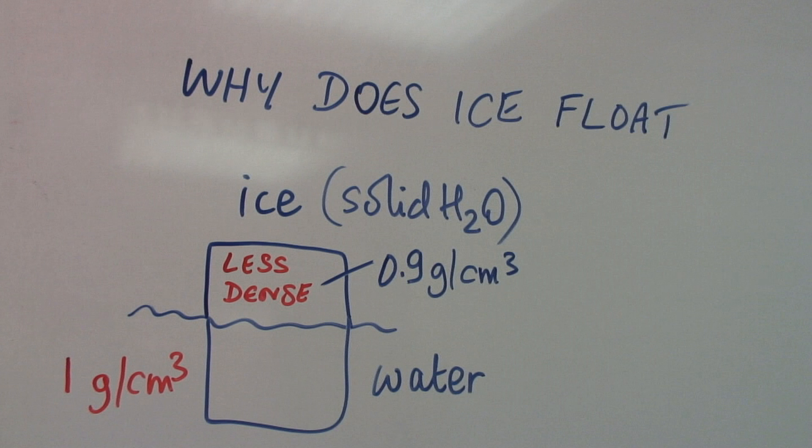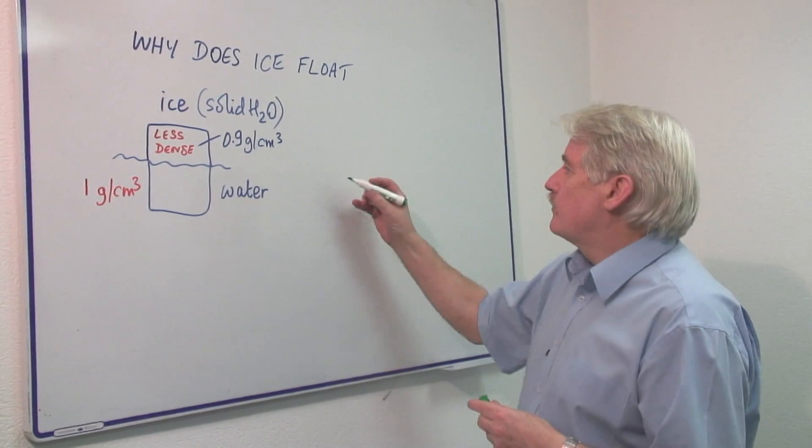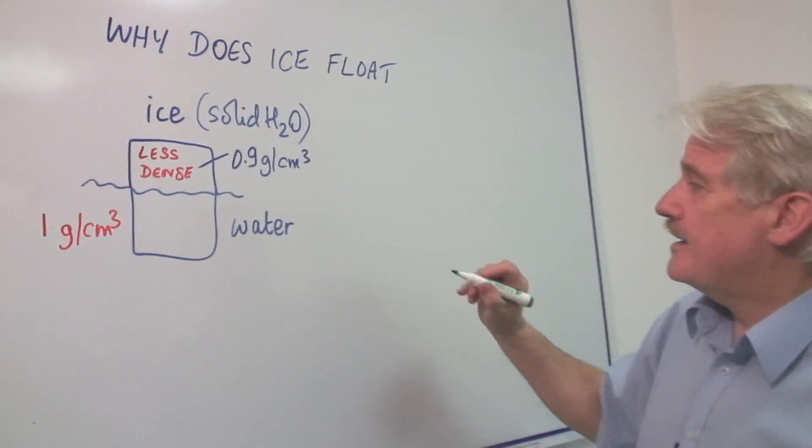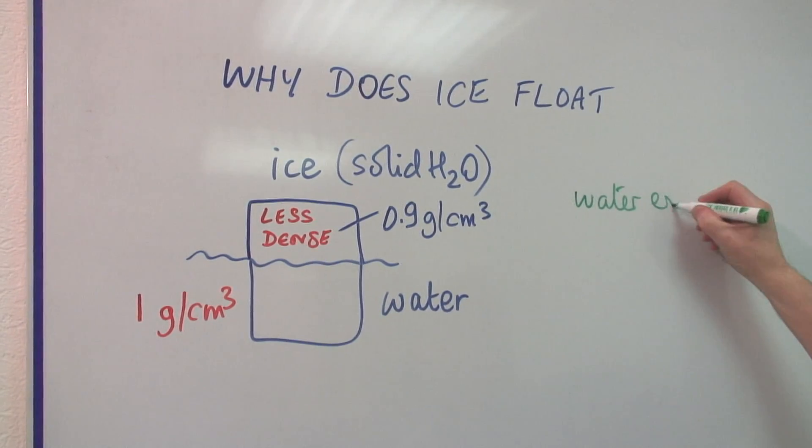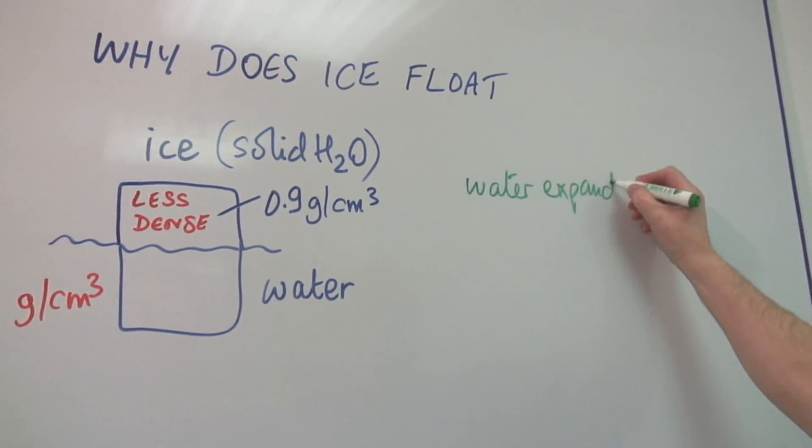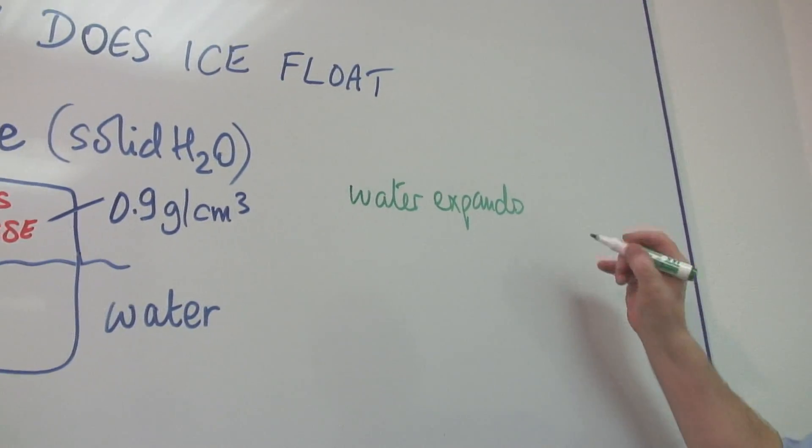The main reason why ice floats is that water, when it freezes, it expands. So water expands when it turns to ice.